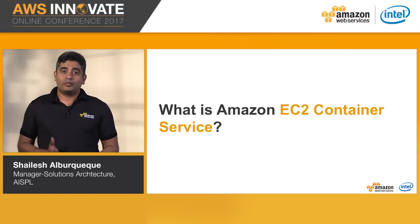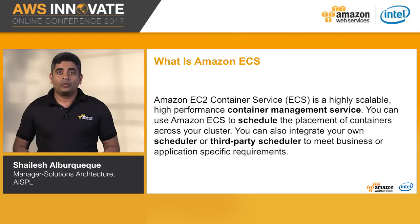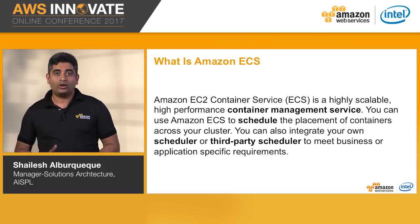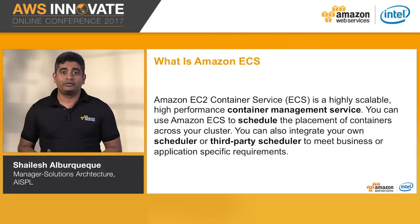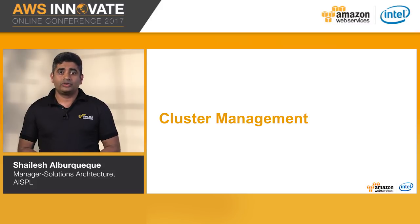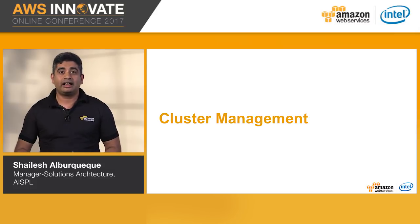Let's now look at Amazon EC2 Container Service, or ECS. ECS is a highly scalable, high-performance cluster management service. You can use Amazon ECS to schedule the placement of containers across your cluster, and you can also integrate your own scheduler or third-party schedulers to meet your specific requirements. To fully appreciate the value of ECS, we need to look underneath the hood and examine its various components to show how we have solved some complex challenges in managing a distributed cluster at scale.